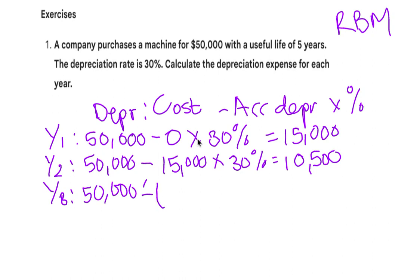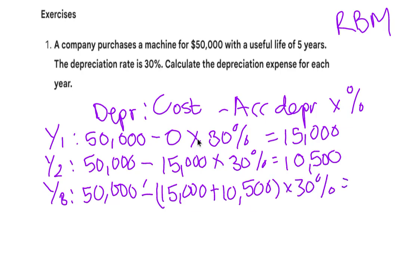For year three, the cost is fifty thousand. Subtract the accumulated depreciation — the depreciation added together for the previous years — so fifteen thousand plus ten thousand five hundred, times thirty percent. Fifteen thousand plus ten thousand five hundred equals twenty-five thousand five hundred. So fifty thousand minus twenty-five thousand five hundred gives us twenty-four thousand five hundred, multiplied by thirty percent. The depreciation for year three is seven thousand three hundred and fifty.